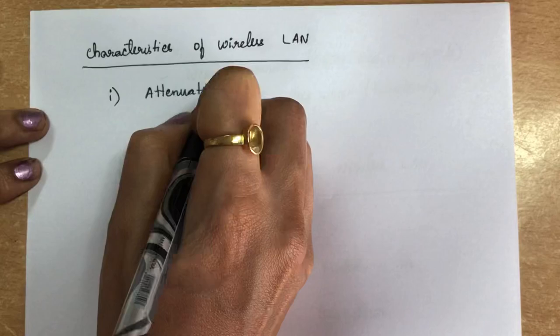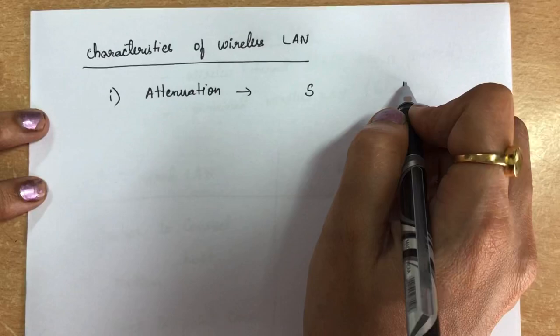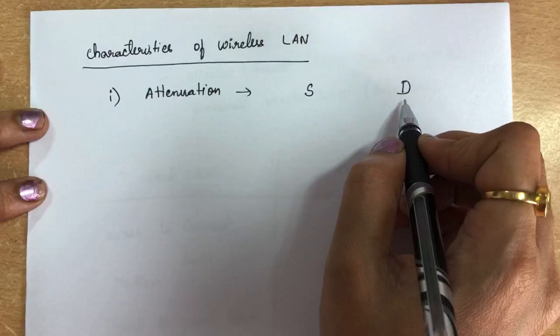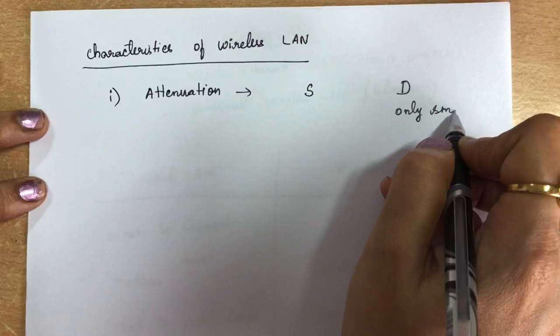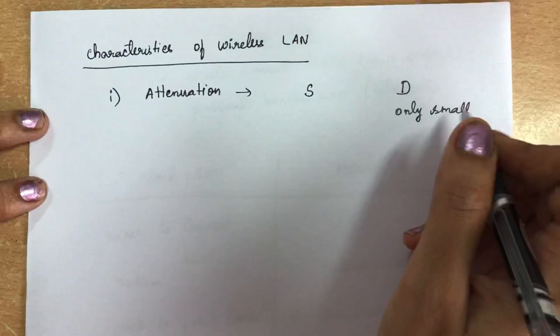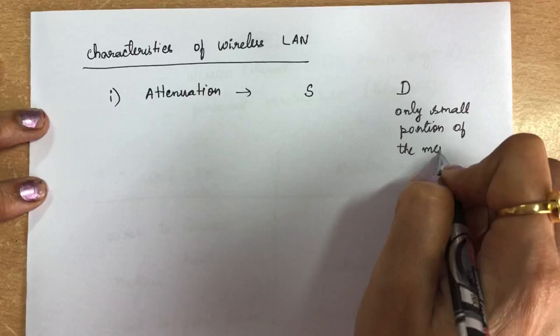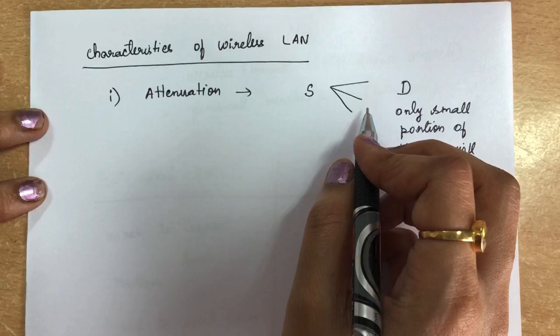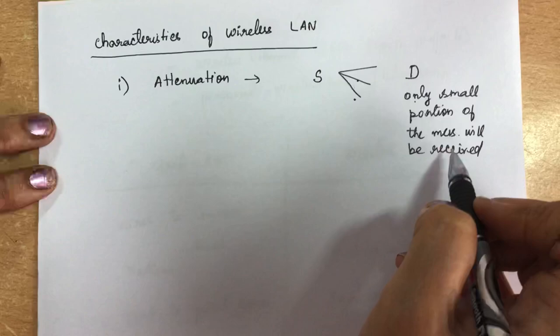Regarding attenuation: when a sender sends signals to the receiver through broadcast, the receiver can receive multiple signals, but only a small portion of the signal will be received at the destination. This is because the strength of electromagnetic waves rapidly degrades and the signal disperses in several directions, so only a small portion of the message reaches the receiver.